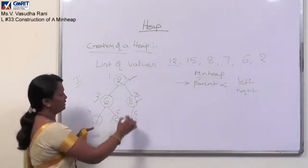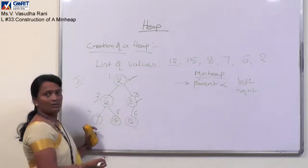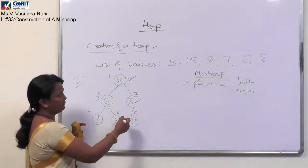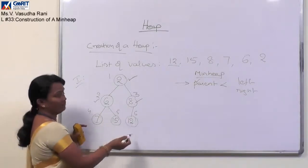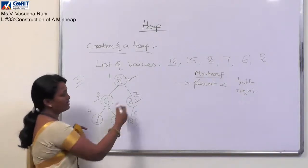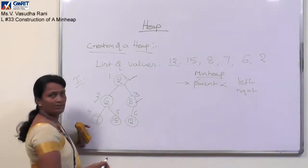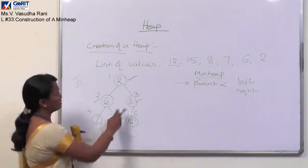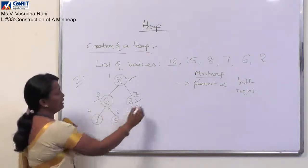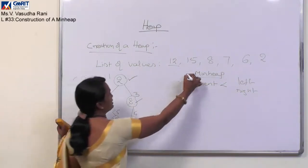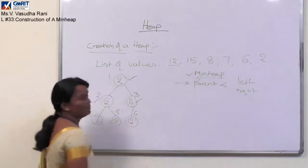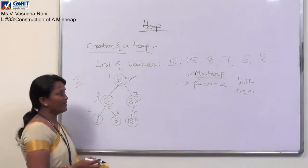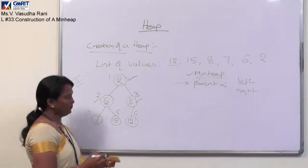Now everything is achieved. At every level the parent has a lesser value than its children. So this is the min heap constructed with the list of values following the first procedure.